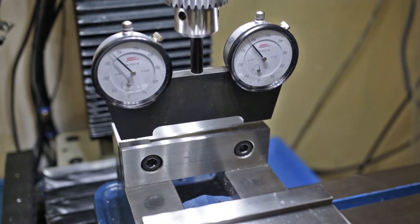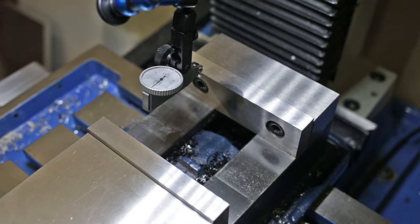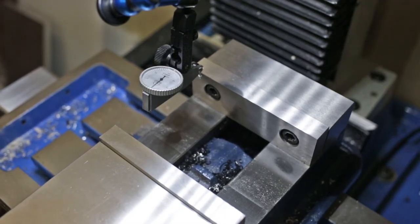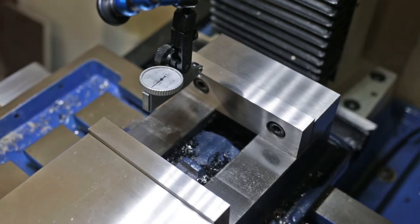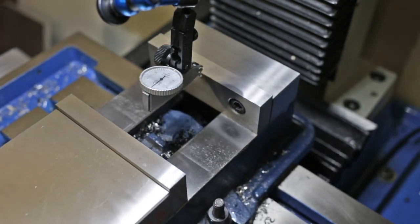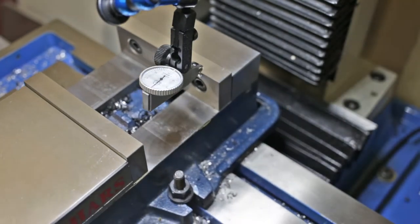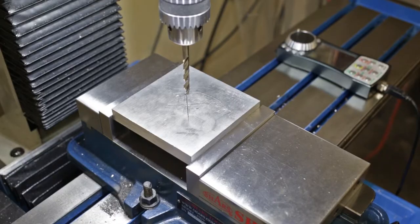Just so I didn't run into any surprises later, I decided to double check my vice and make sure that it's squared up too. I'm not really all that concerned about the accuracy of these parts, but I might as well check all these things before I start cutting.